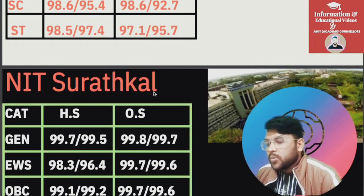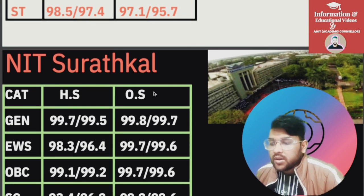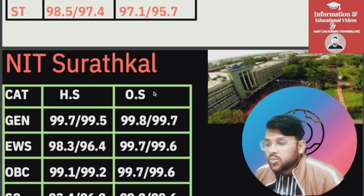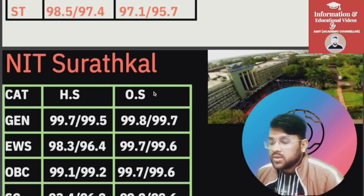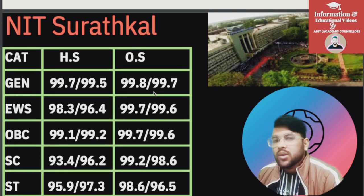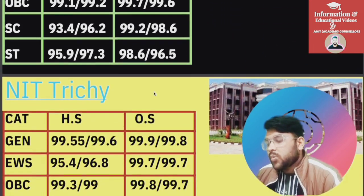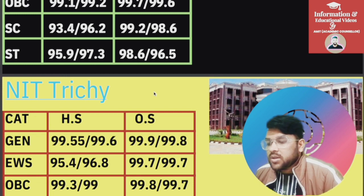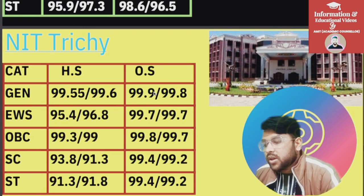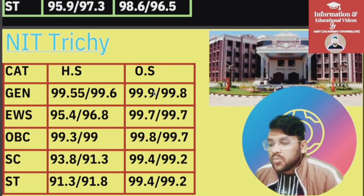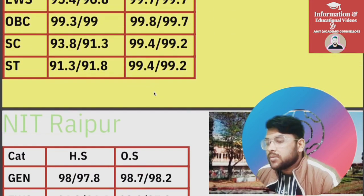For NIT Surathkal: General 99.8, EWS 99.7, OBC 99.7, SC 99.2, ST 98.6 percentile. For NIT Trichy: General 99.9, EWS 99.7, OBC 99.8, SC 99.4, ST 99.4 percentile.